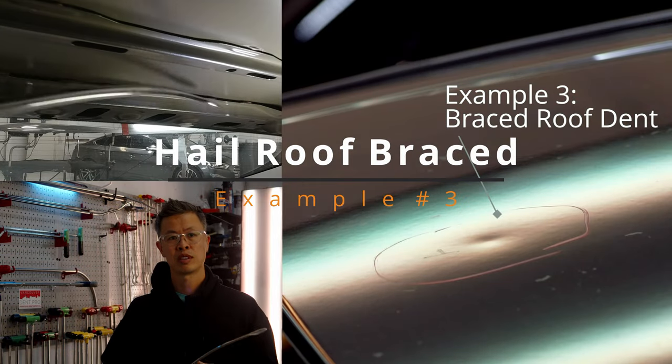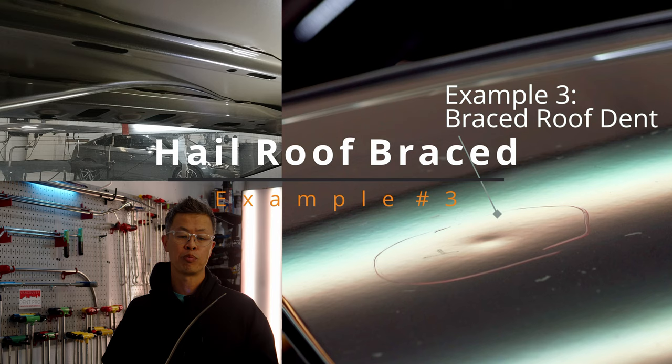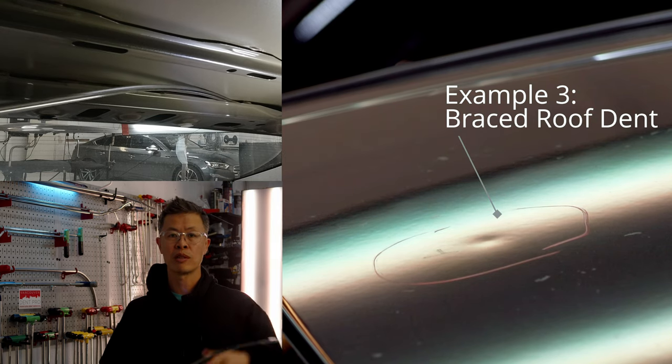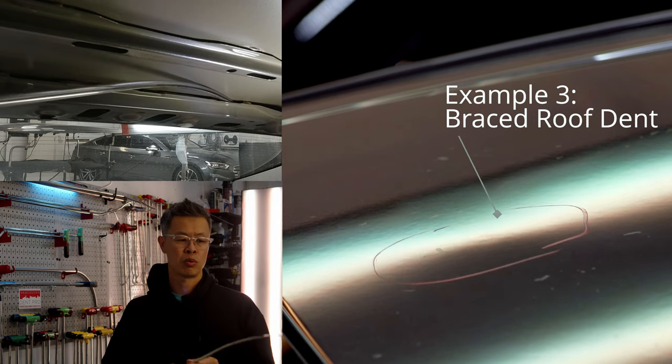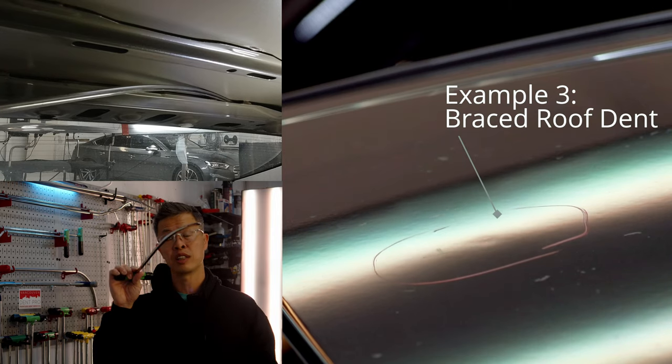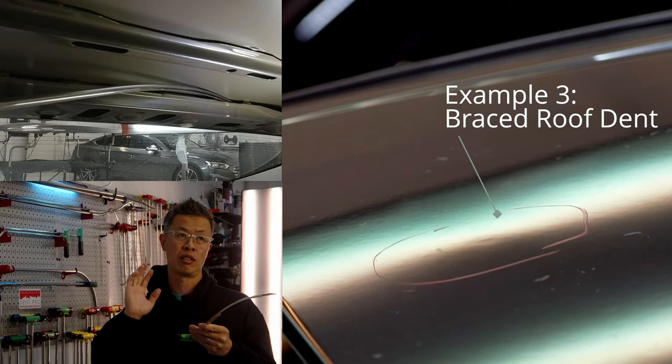And the second roof dent was up by the back glass. Out by the back glass there's that really wide brace, so it's not a tight one. So this one, the long one, could actually fit in right across. This was past halfway.